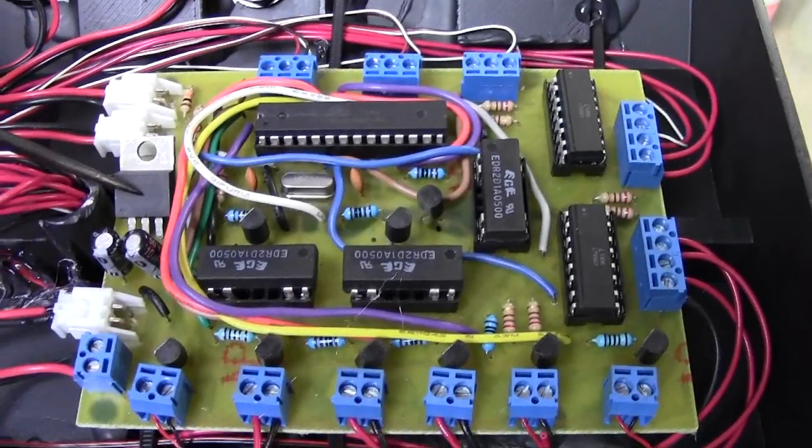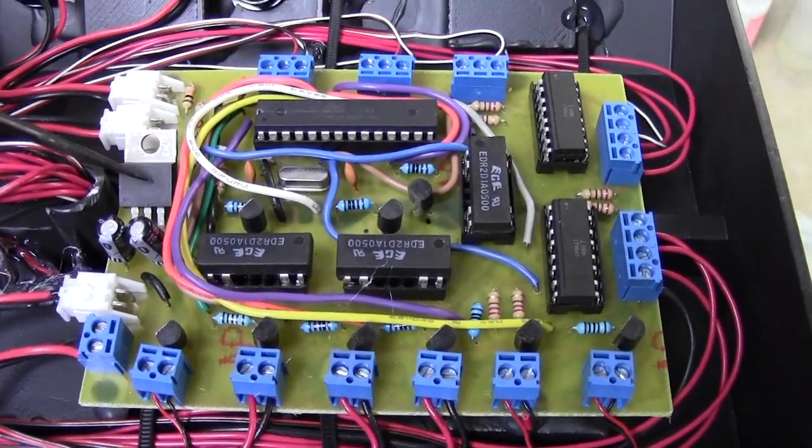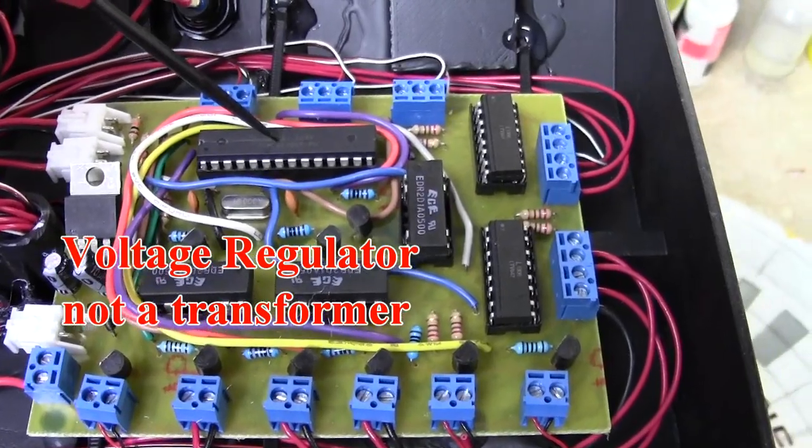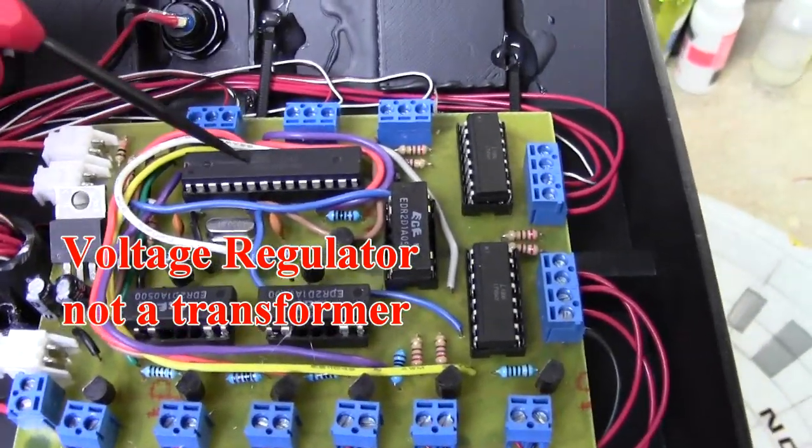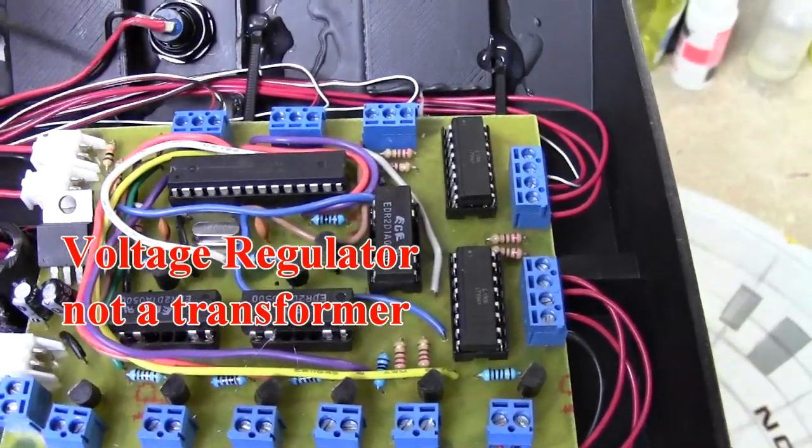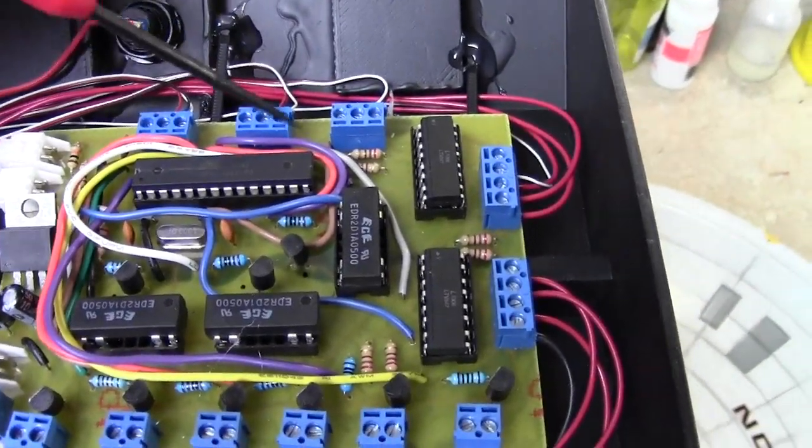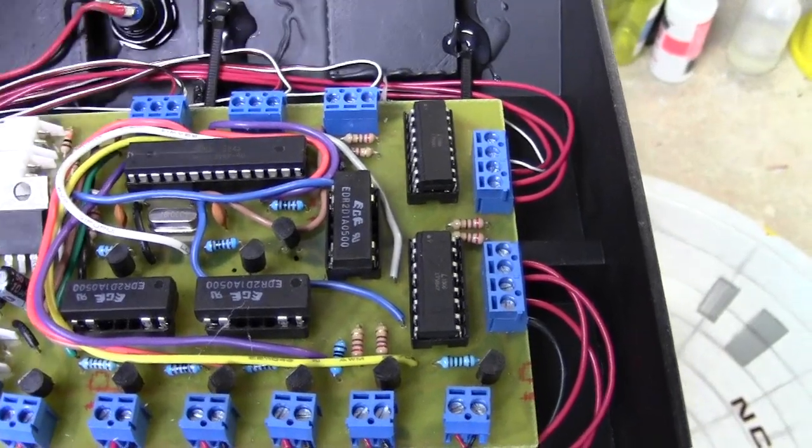This board has a step-down transformer so that I can supply 5 volts to the processor chips. Everything else is running at 9 volts with these three being the exception. These are 5-volt lines.